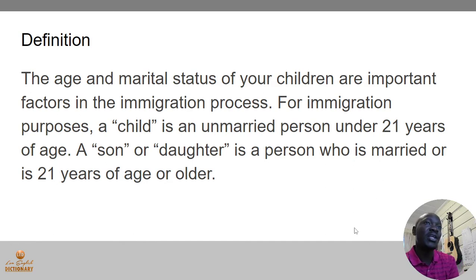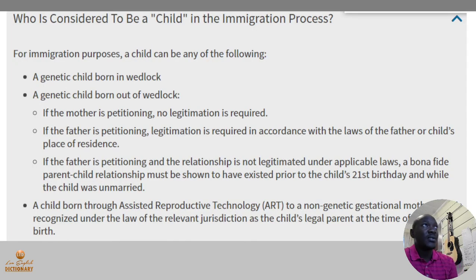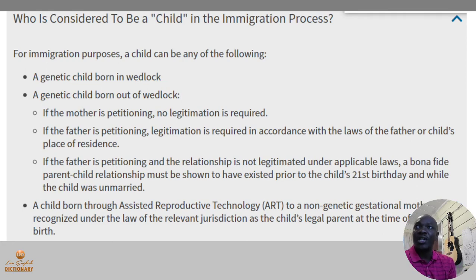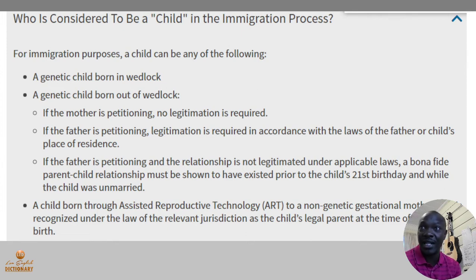So who is considered to be a child? For immigration purposes, a child can be any of the following: a genetic child born in wedlock — that is a child born when husband and wife have a child together.